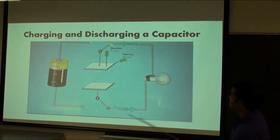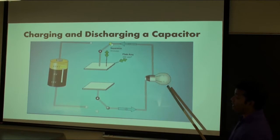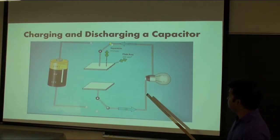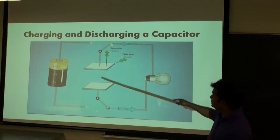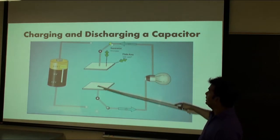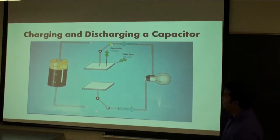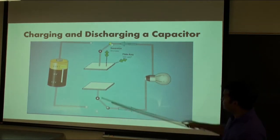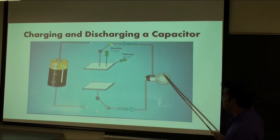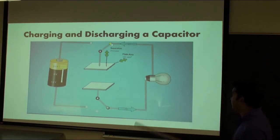Initially the brightness of the bulb was high because initially the capacitor has maximum charge and it starts discharging. Eventually the capacitor has no charge and there is no current, so the bulb has no brightness.